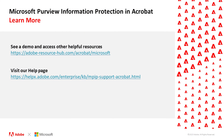Microsoft Purview Information Protection is available with a Microsoft E3 or above license. To learn more about protecting PDFs with Microsoft Sensitivity Labels directly in Adobe Acrobat, check out the Adobe Acrobat resource hub or visit our help page.